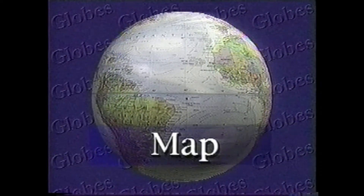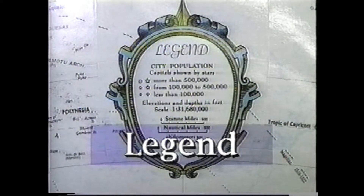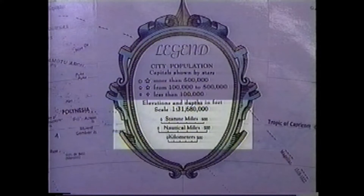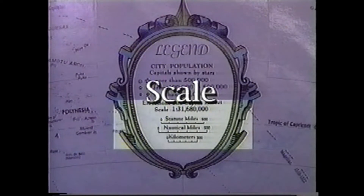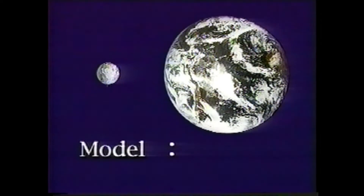A globe is a type of map. Globes use a legend to show what the symbols represent. The legend also gives us the scale of that particular globe. The scale tells us how the model compares in size to the real thing it represents, the Earth.